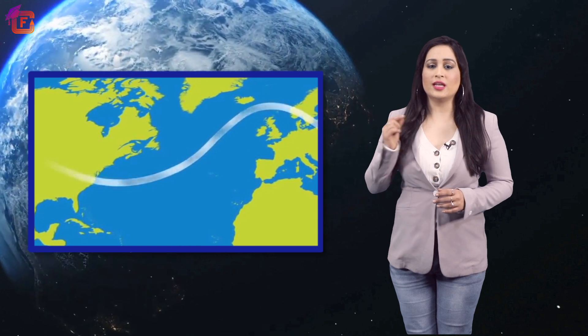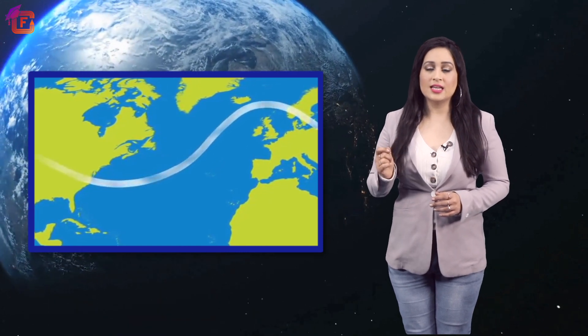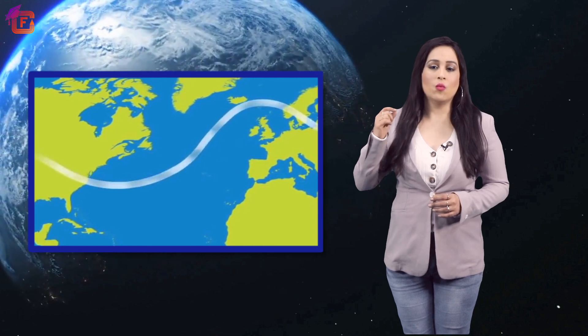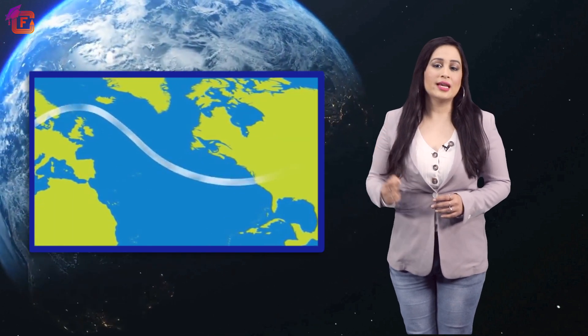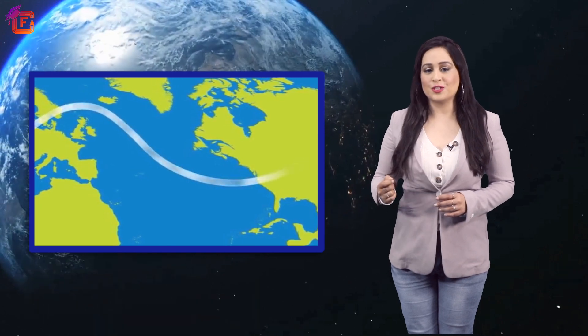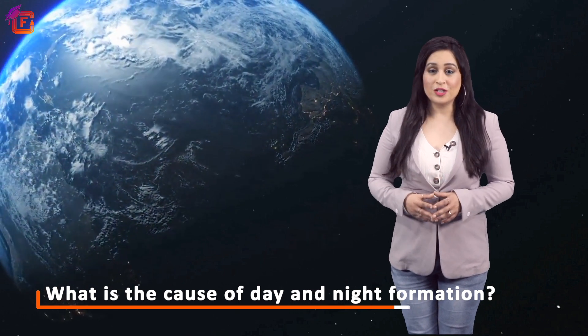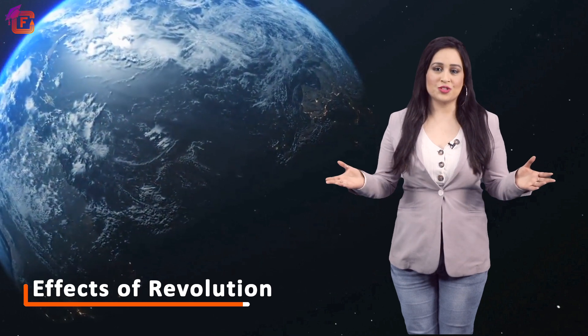Due to Earth's rotation, the air which keeps circulating is deflected towards the right side in the case of the northern hemisphere, while in the case of the southern hemisphere it gets deflected to the left. In this video we have learned the various effects of Earth's rotation: day and night formation, ocean currents, and wind deflection. In the next video we will learn about the effects of revolution. Bye, stay happy!